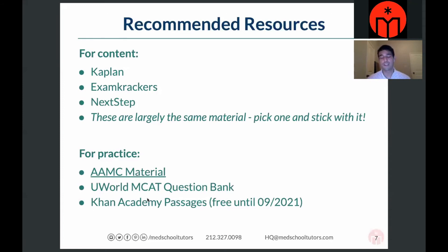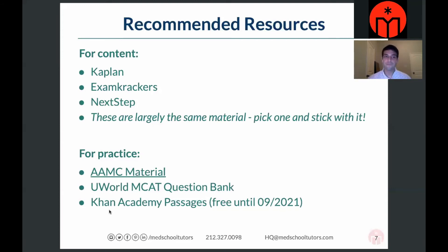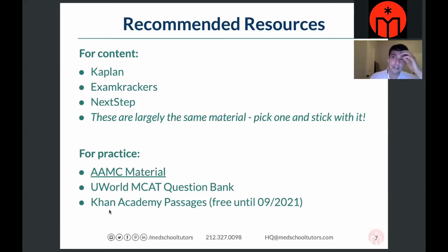Another free resource — unfortunately going away at the end of September next year — is Khan Academy passages: lots of passages with associated questions for all four sections of the MCAT. Also worth mentioning are third-party full lengths. Kaplan, Princeton Review, Blueprint, and Altius all offer them. My personal favorites are Blueprint and Altius, because those full lengths are most representative of the MCAT style and your scores will be most representative of the real thing. Use those as full-length practice before moving to AAMC material in the final stretch of prep.